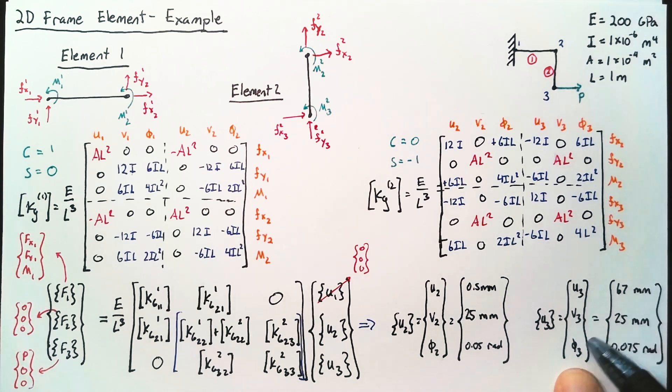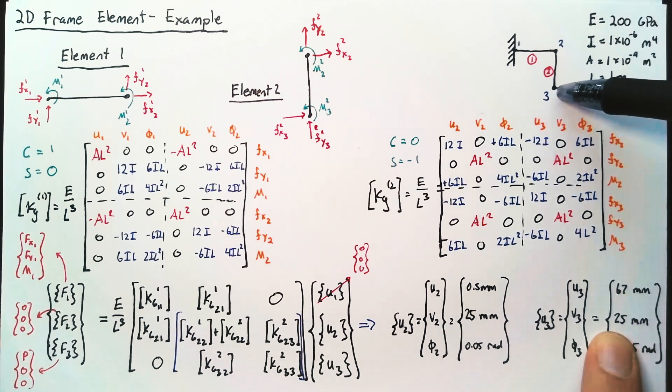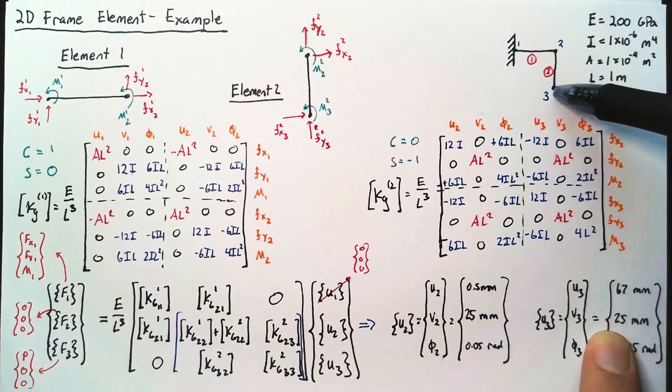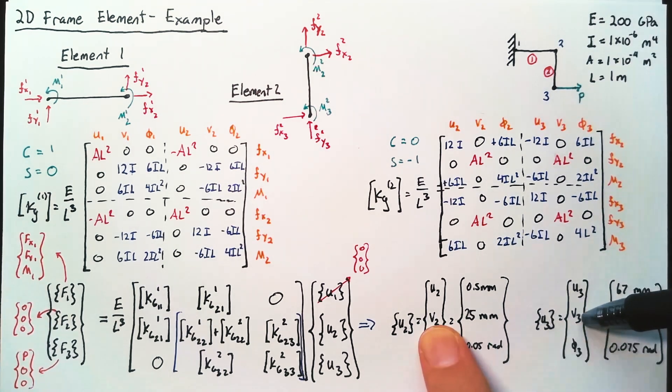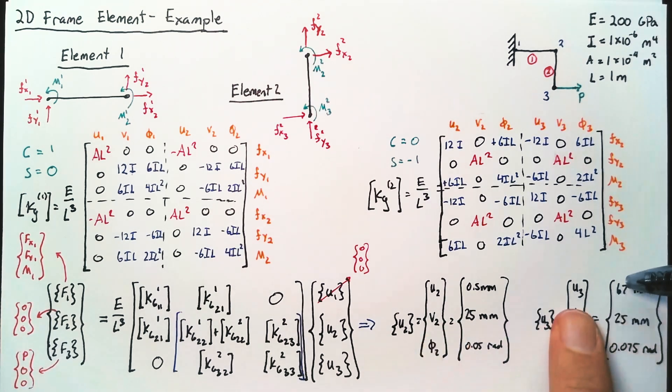For node 3, again, we see that exact same V3. And that's just because we don't have any extensive forces on this element. And so that force outward doesn't change the vertical displacement between the two nodes.